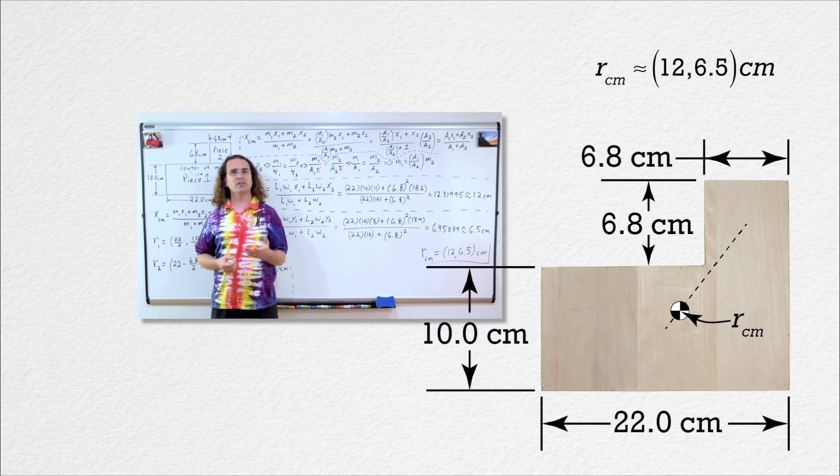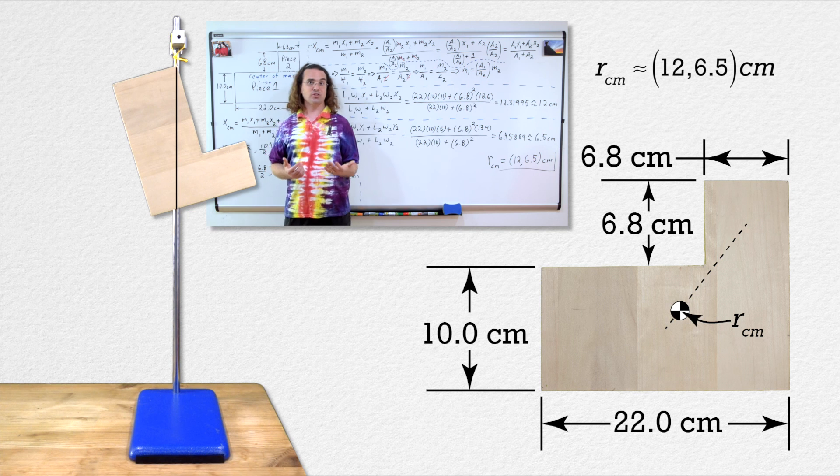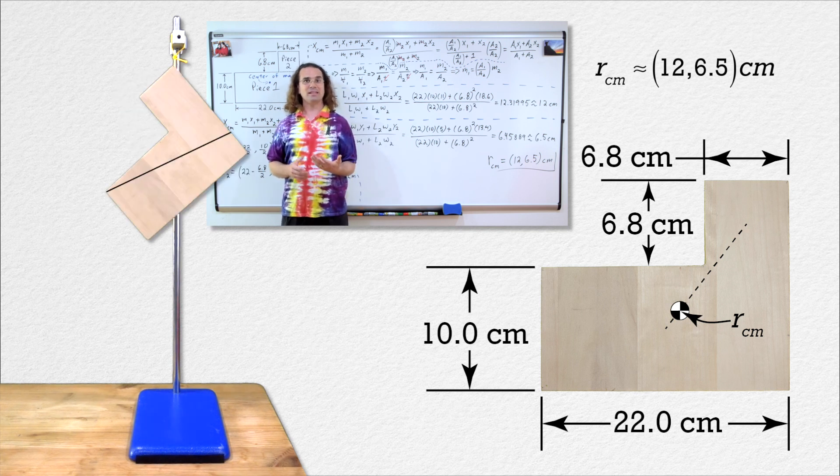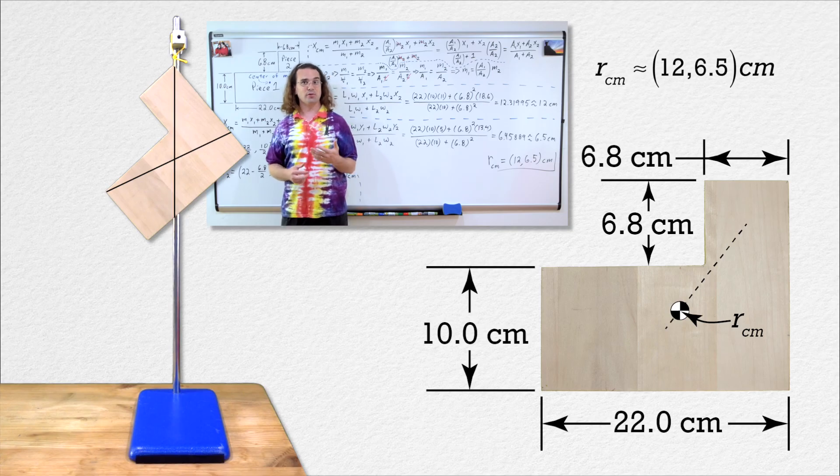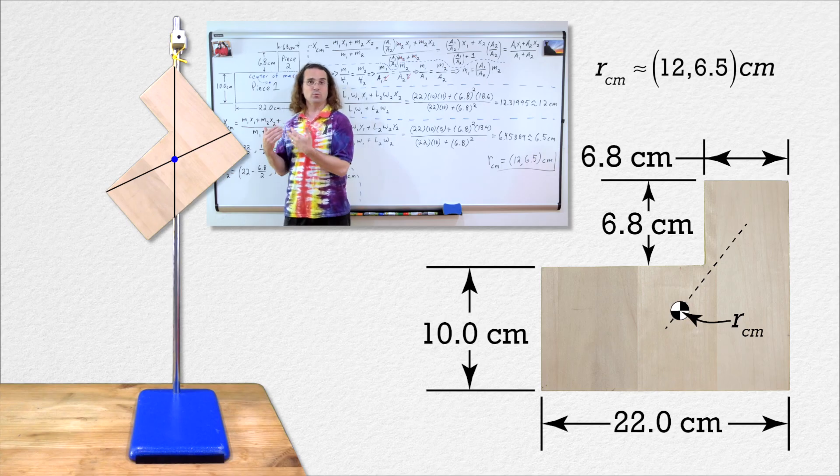And if you recall, we can determine the center of mass of any flat object by hanging it from different points. So, here it is hanging from one point. Add a vertical line on which the center of mass must be located, and we can rehang the object from a different point and add another vertical line. Those two lines intersect where the center of mass of the L-shaped block is located. We can add a dot there to indicate it is the center of mass, and you'll notice it matches what we determined.